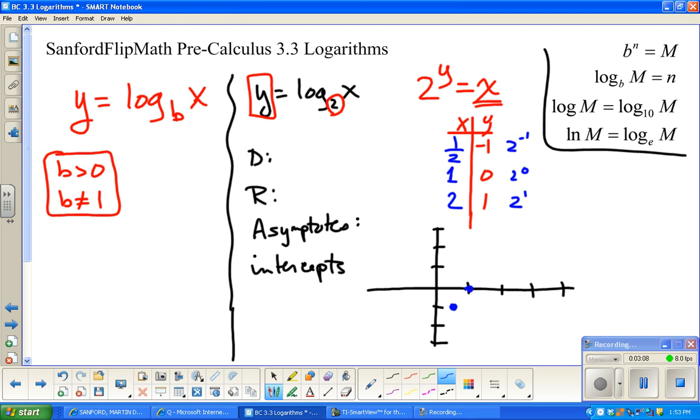What I want to do for just a second is entertain the possibility of what if I wanted to make this work for x equals 0? That would mean I'd have 2 to the y equals 0. So the question is, 2 to what power is 0? Well, 2 to the 0 power was 1. So, as I like to say, that ain't it.